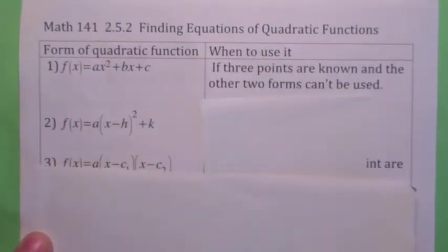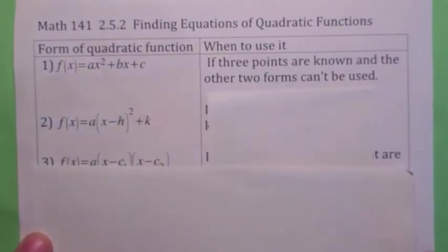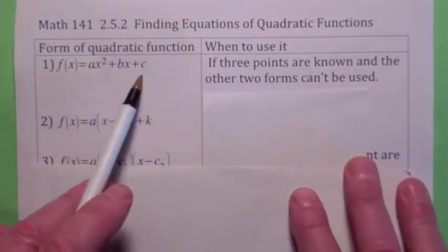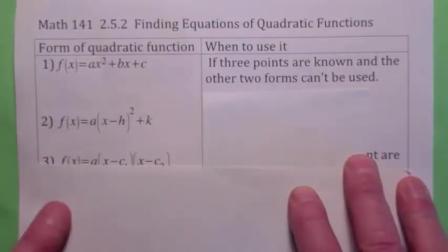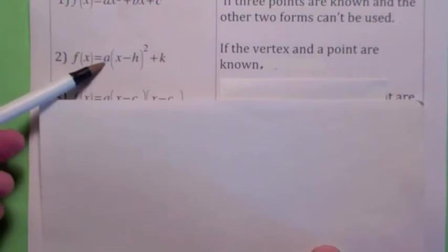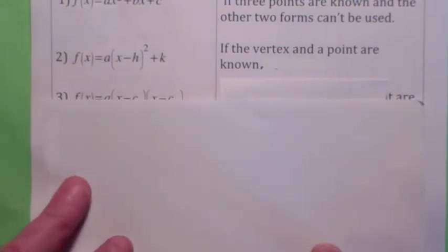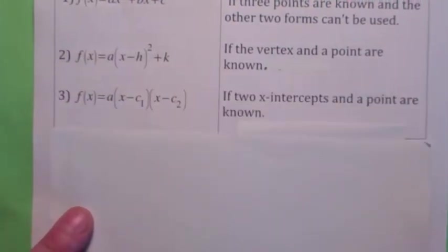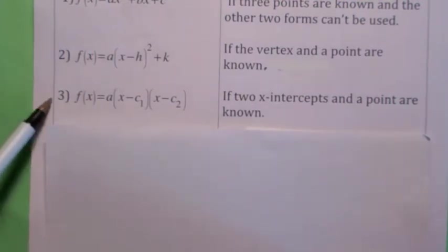You would use the standard form if you can read three points from the graph — hopefully one of them will be the y-intercept, because if you know the y-intercept, you know c, and that makes it a lot easier. You would use the vertex form if you can read the vertex and a point. The reason you need a point is because that's how you find a. And you'd use the factored form if you can read the x-intercepts and a point — again, you need a point to find a.